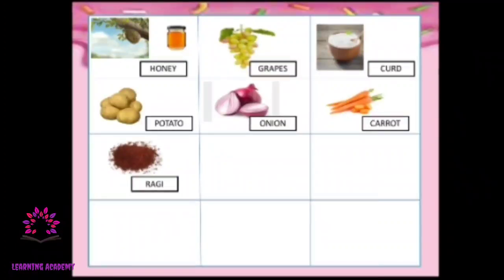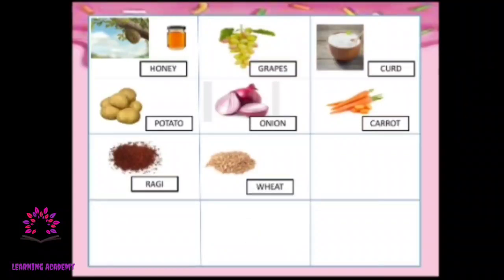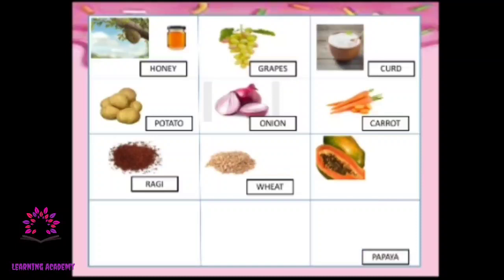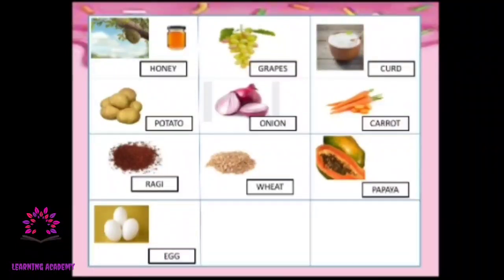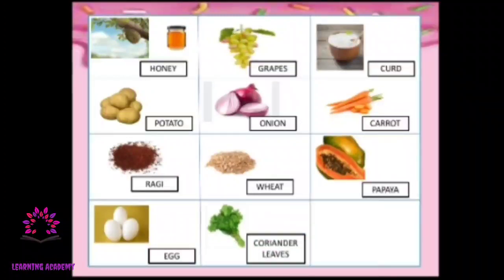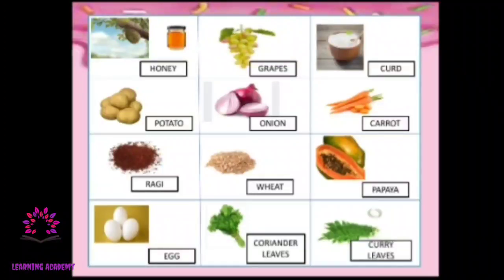This is cheese. This is ragi. This is wheat — out of wheat you are preparing chapati, right? This is papaya. These are eggs. What is this? This is coriander leaves. This is known as curry leaves. Coriander leaves and curry leaves are used to prepare curry.